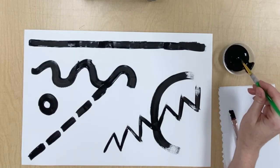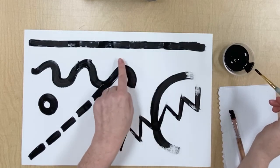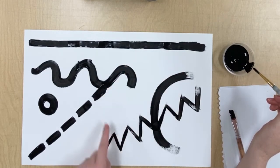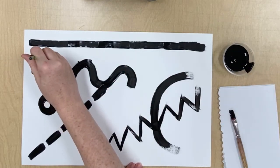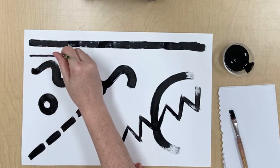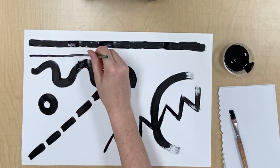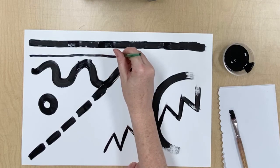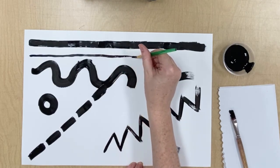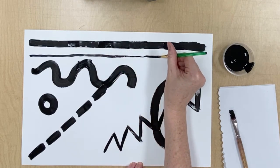Now we're going to switch to our thin brush. All these areas that I've left open is where I'll be painting. Start out just like you did with the thick brush, making a long thin line at the top of your paper.